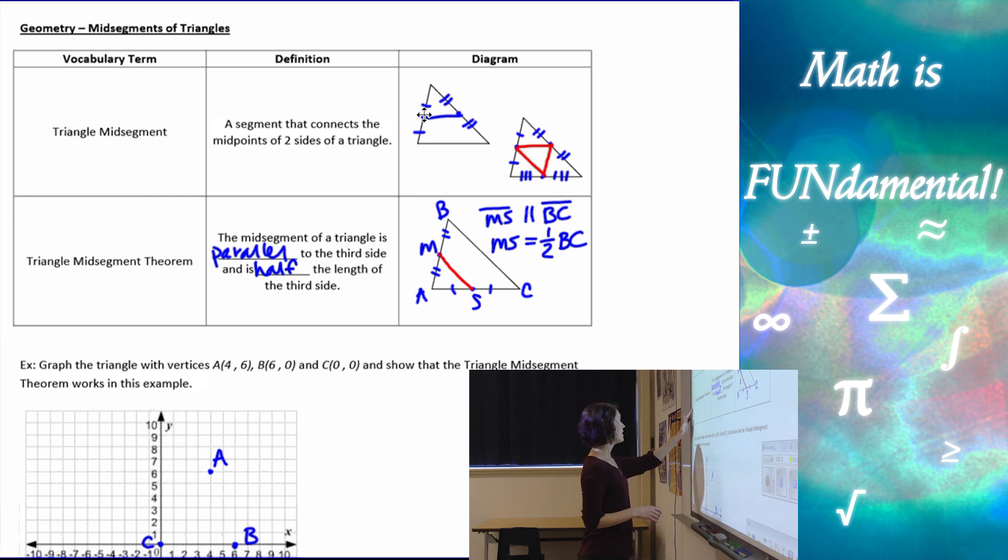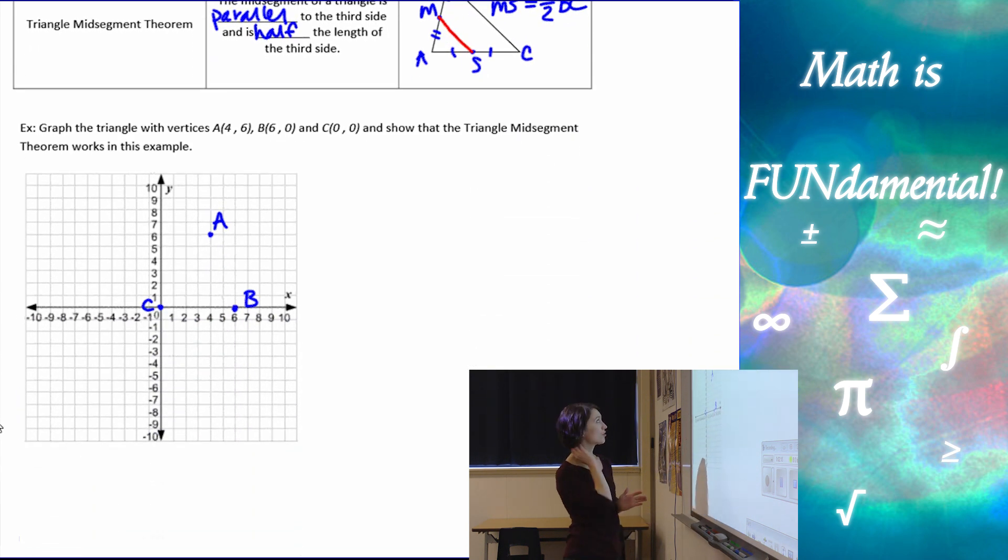Alright, let's look at an example. We have here, graph the triangle with vertices ABC here, and show that the triangle mid-segment theorem works in this example. So I've graphed the points on my grid, and if I connect those, I end up with triangle ABC.